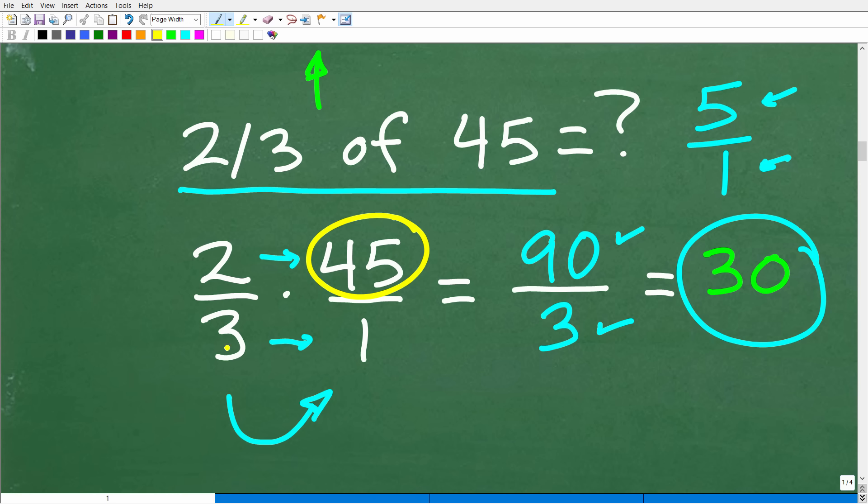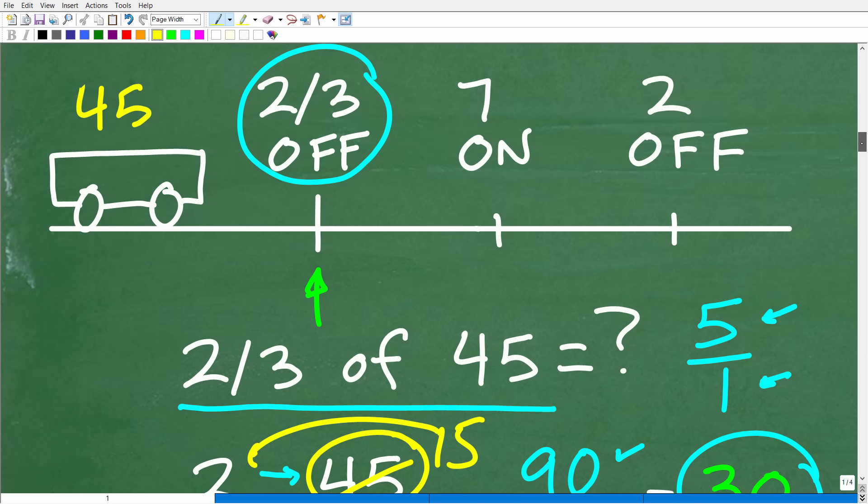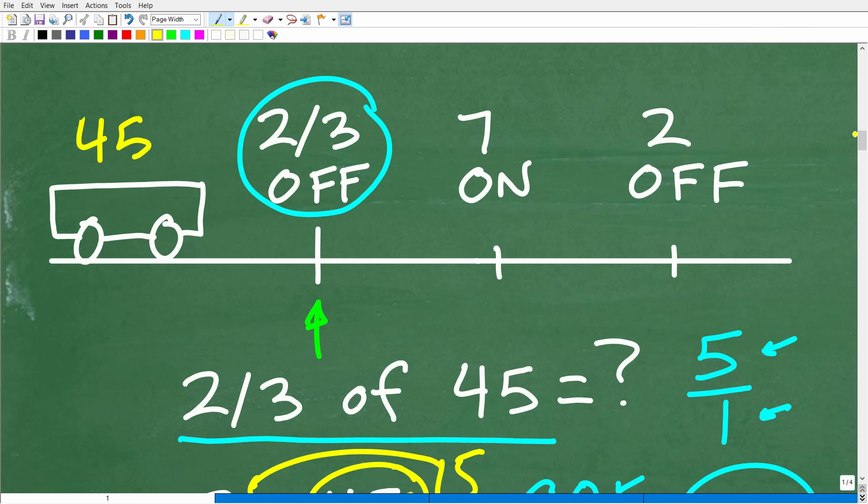Now, some of you could have said, well, look, I know 45 in here is 3. 3 goes into 45, 15 and 15 times 2 is 30. And that is fantastic as well. So either way, as long as you came up with 30 as the right answer, well, then we are on our kind of road, if you will, to figuring out the solution.